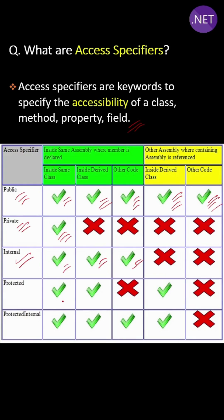Protected is accessible within the same class and its child or derived class only. The last one, protected internal, is just a combination of protected and internal.